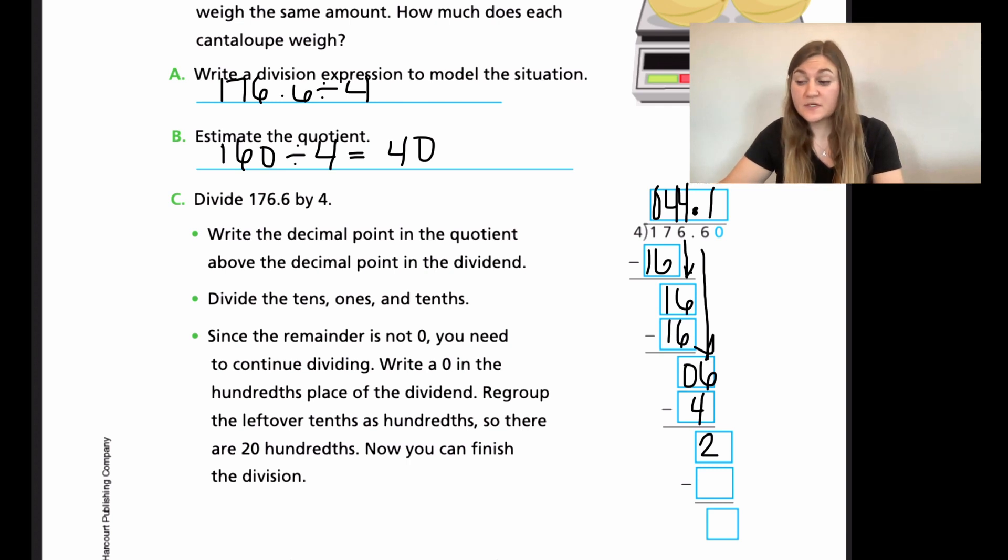But with decimals, what we're allowed to do is what's written in blue is we can keep the division going by adding on zeros because it's not changing the value of the dividend. It's just allowing us to find how small this decimal actually is. So what the problem did for us here in blue is it added a zero right here. And so now what we're allowed to do is we're allowed to keep going until the problem ends. So now we can bring down that zero next to our two to make it 20. So now four goes into 20. We know that goes in five times equally. So that five times four is 20. And now we're ending on a zero. So instead of 44.1, which technically is correct, the most accurate answer is 44.15 because we know that it's exactly right. It's the exact amount because our division problem ended in a zero instead of in that remainder two.